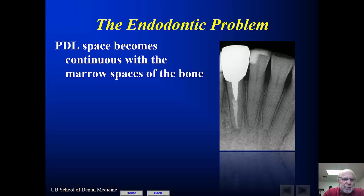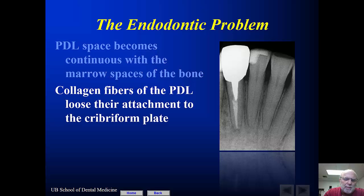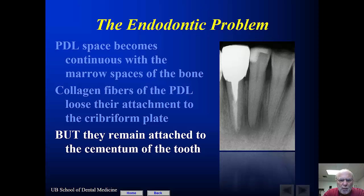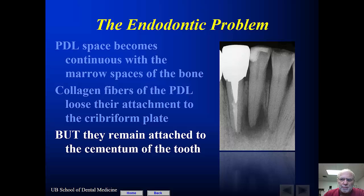When we have endodontic disease, the periodontal ligament space becomes continuous or contiguous with the marrow spaces in the bone. When we have a periradicular infection or an acute alveolar abscess, the collagen fibers of the periodontal ligament lose their attachment to the cribriform plate — but, and this is the important part, they remain attached to the cementum of the tooth. If you look at this image, this particular tooth can have a lot of endodontic breakdown and be fairly mobile, but by eliminating the etiology, you're going to be able to bring this tooth back to health.